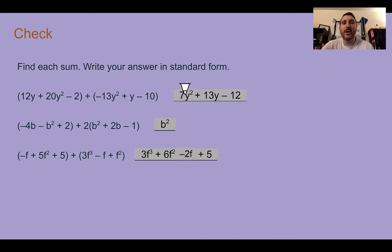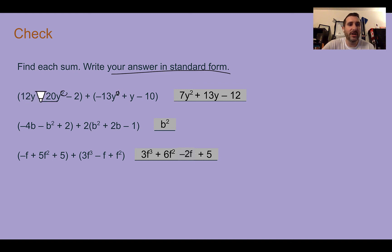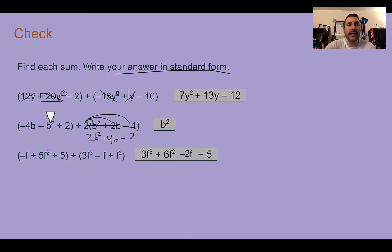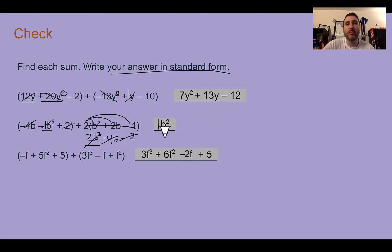Check your answers. For the first one, the answer is 7y squared plus 13y minus 12. Start with the highest degree: 20 minus 13 is 7 for the y squared terms. Then 12y plus y is 13y. Then negative 2 plus negative 10, same sign, keep and add, gives negative 12. For the second one, there's a distribution that needs to happen first, giving 2b squared plus 4b minus 2. Combining: negative 1 plus 2 is positive 1 for b squared; negative 4b plus 4b is 0; plus 2 minus 2 is also 0. So those cancel, leaving just b squared.